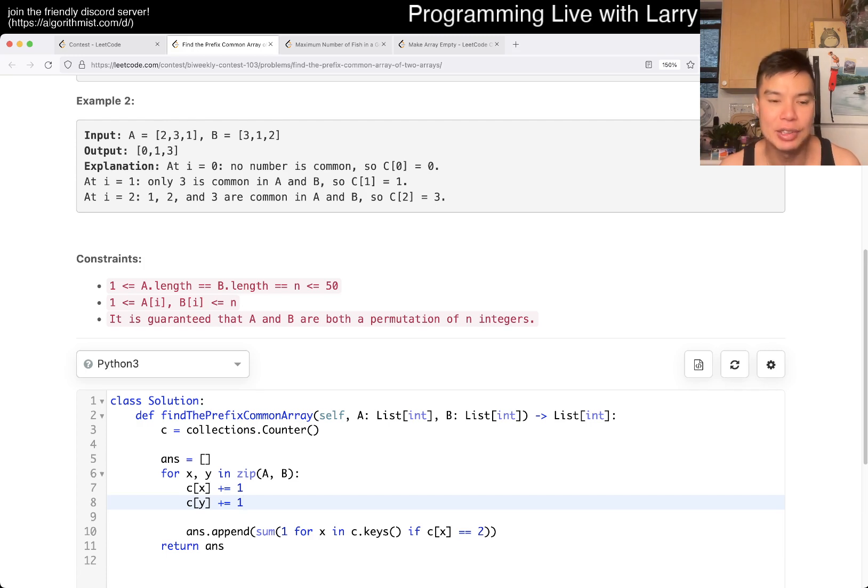This is n squared the way that I did it. You can actually do it even in a better way. Basically you could do it in linear time by having a set, a set for things you've seen on a, things you've seen in b, and then just do like comparison and if statements.